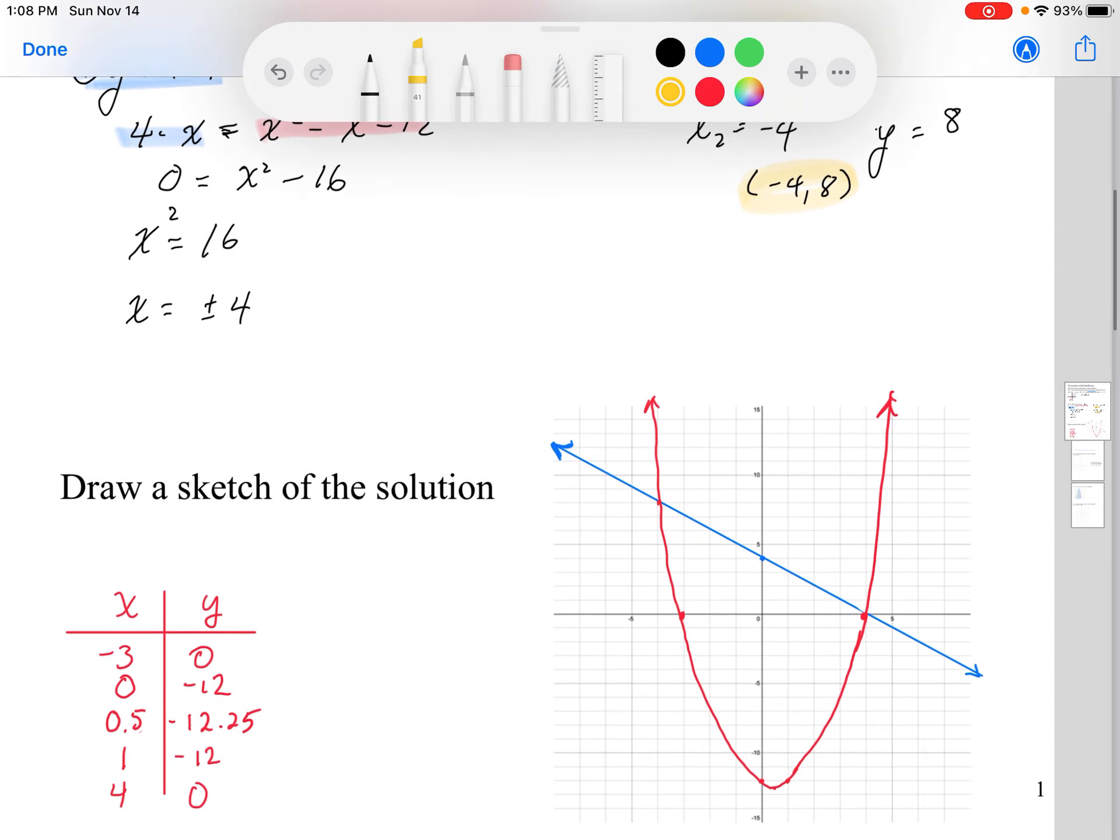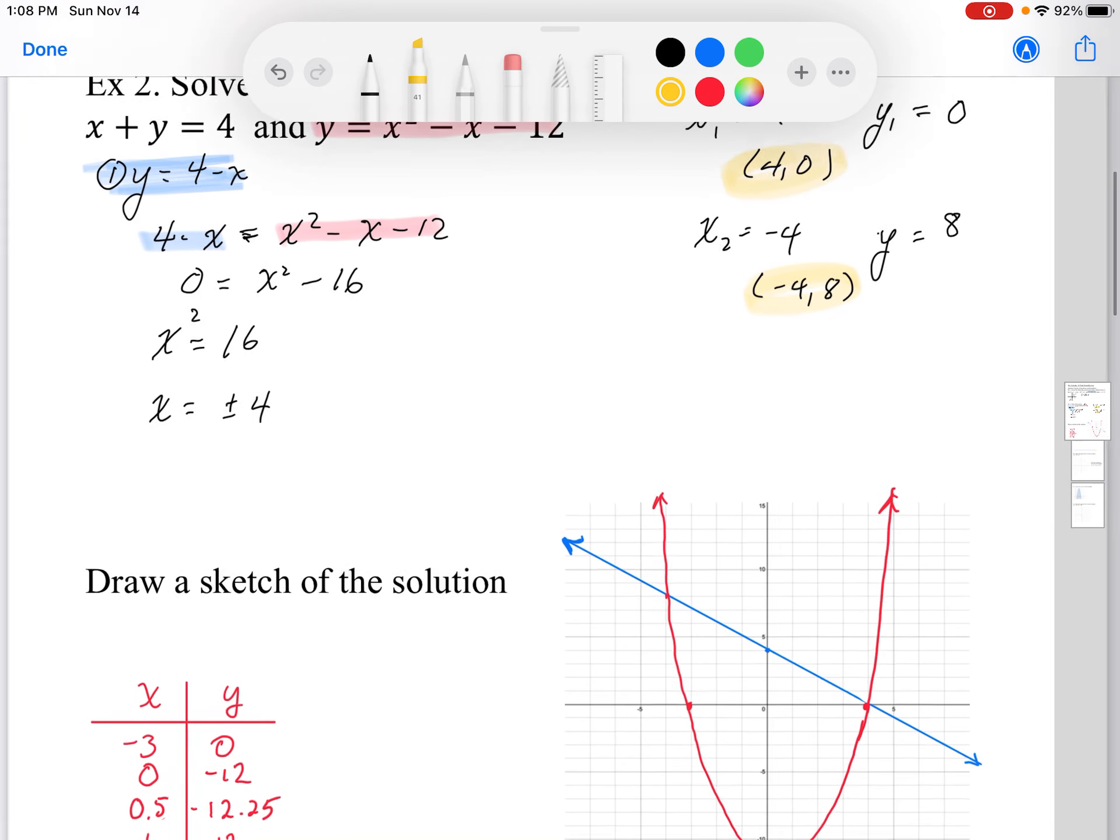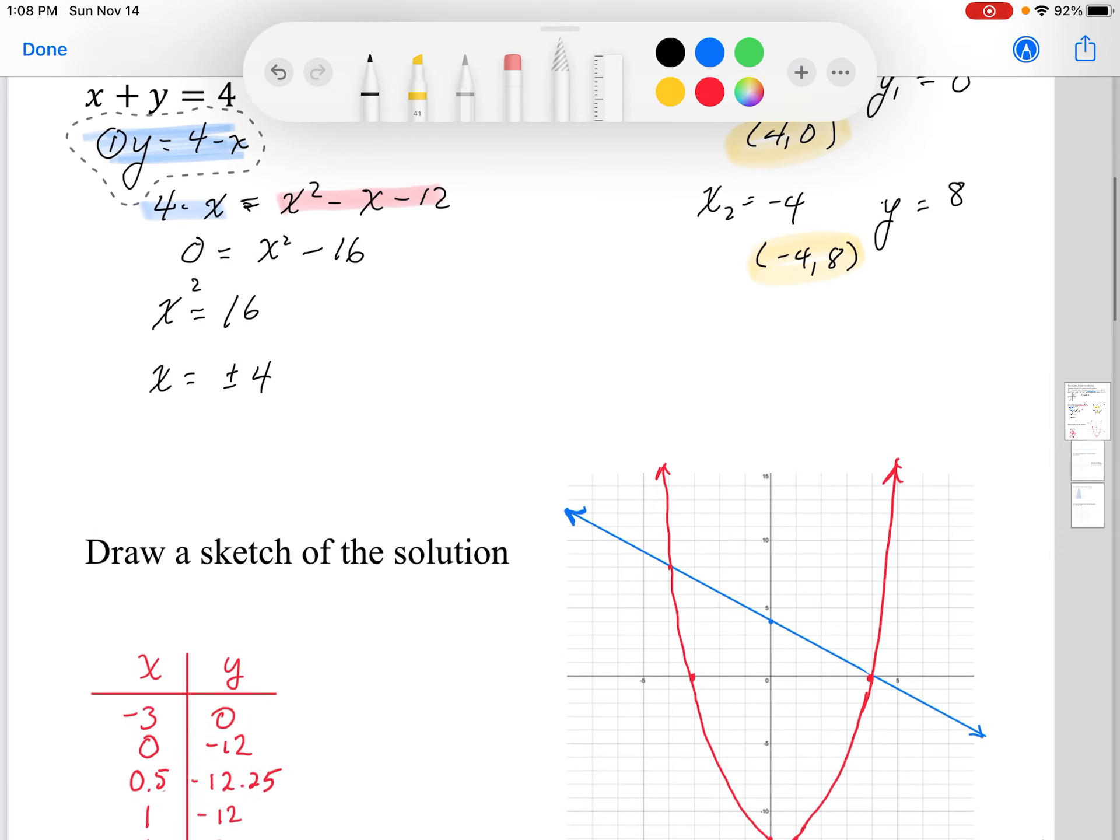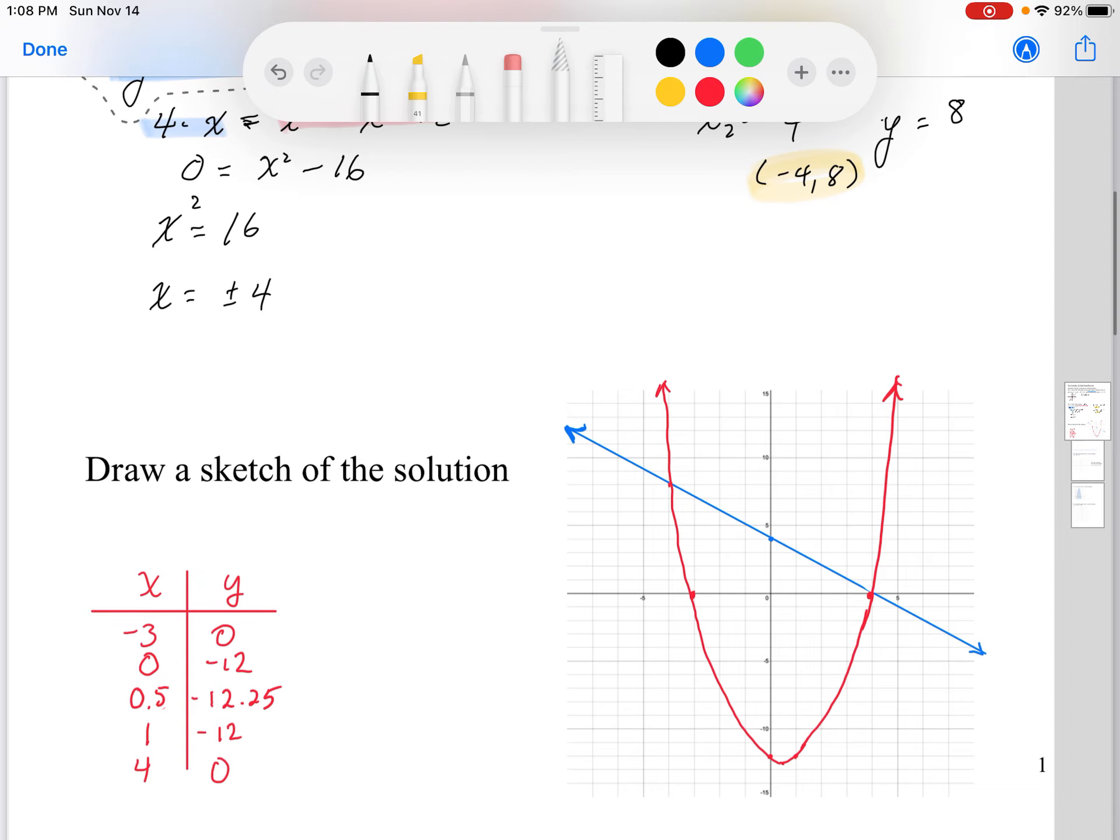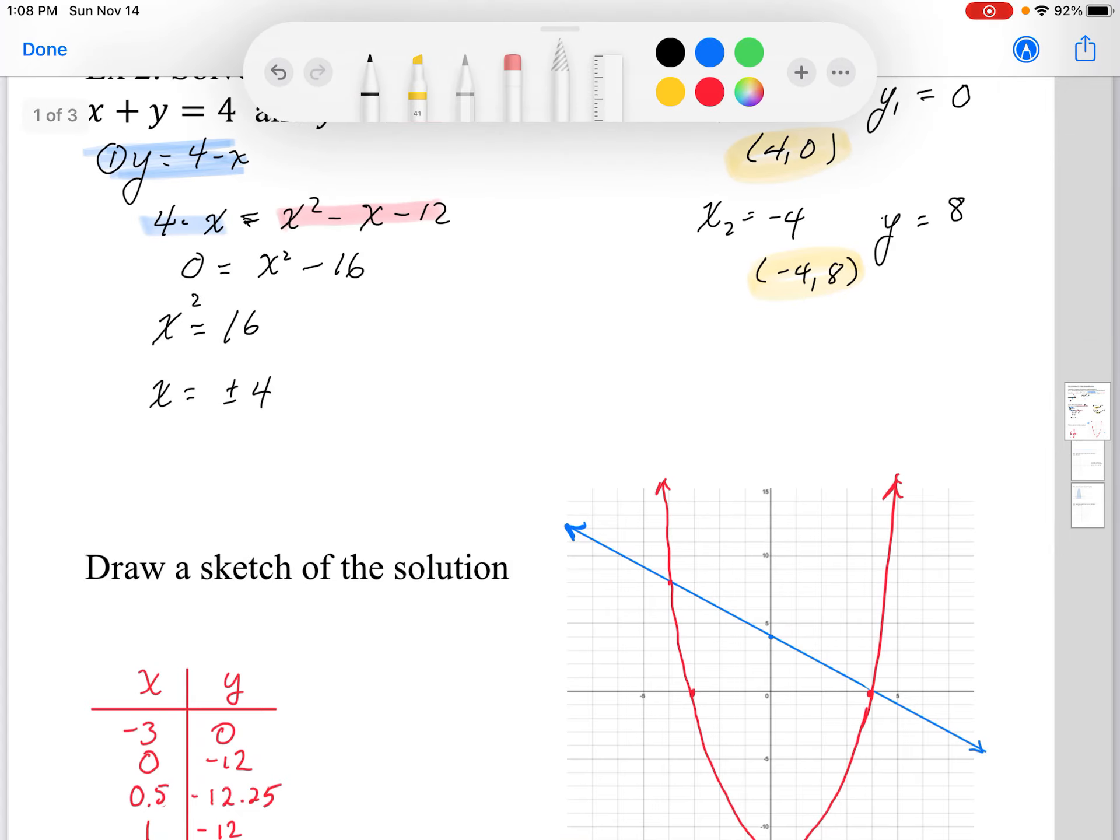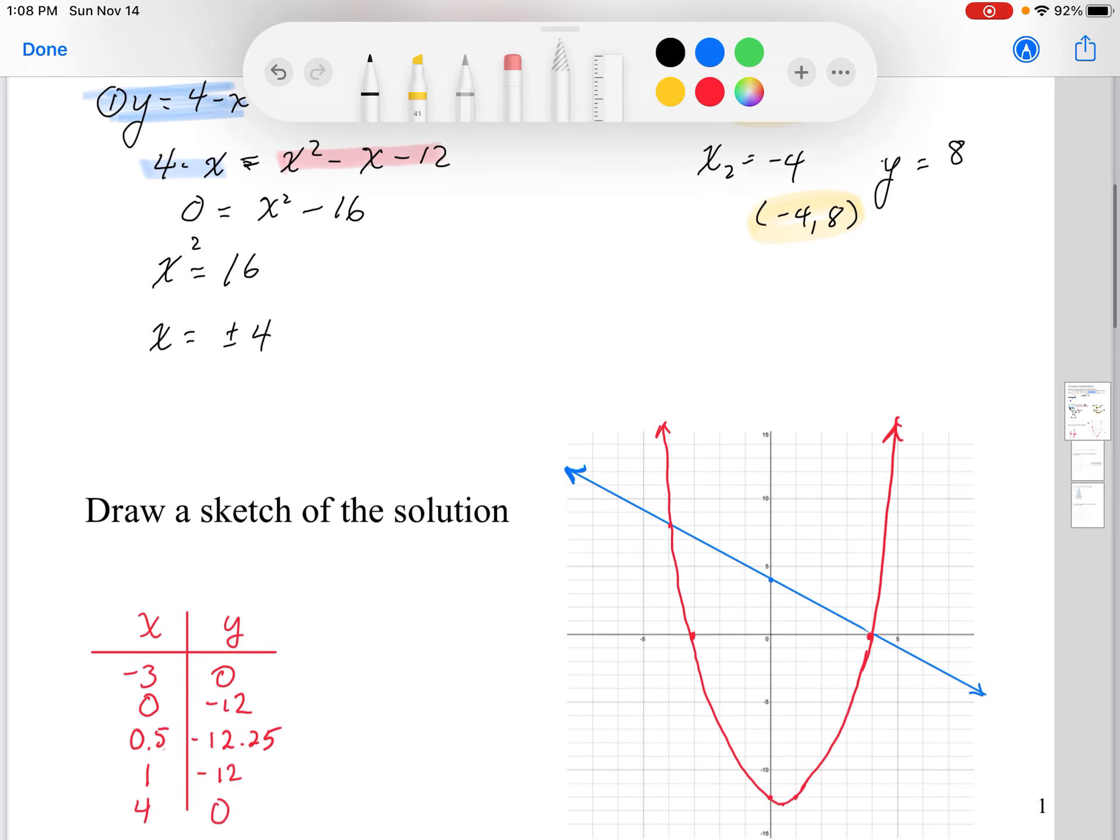Now when I sketch this, I'm going to sketch a parabola for the red part for equation 2 and a linear function for the blue part. Just looking at the first function y equals 4 minus x, it has a slope of negative 1, y-intercept of 4. So I've drawn it in blue here. For the parabola, since it is in the general form, I can get the y-intercept at negative 12. But I want some symmetrical points to graph this.